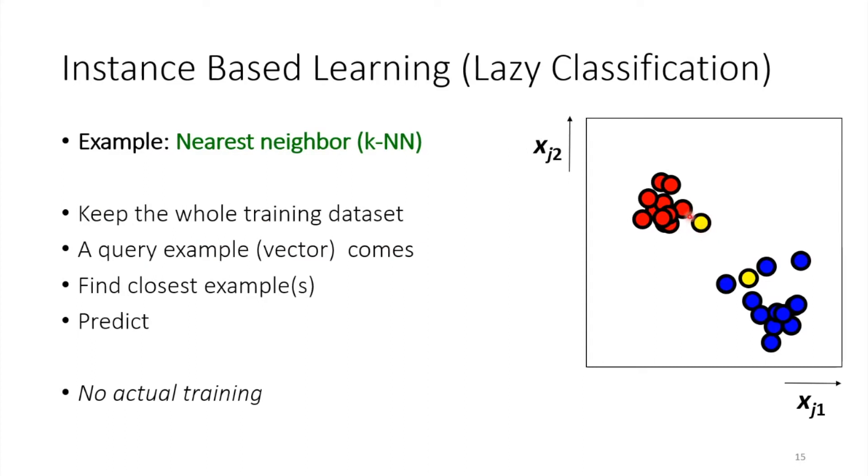you basically find the closest example to it or the closest set of examples. So in this case, if we take one neighbor, so one nearest neighbor classifier, for the yellow one, I look at the nearest neighbor, I find this red dot over here, then I know that the yellow circle over here has to be red. So my predicted label for it is red. And the same goes over here. So if I have a yellow dot over here, then I look at the nearest neighbor, this one, so it has to be blue. And this is an example of one nearest neighbor.